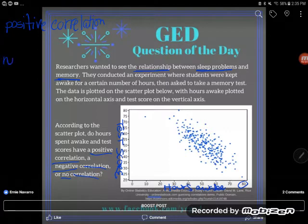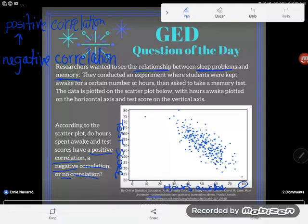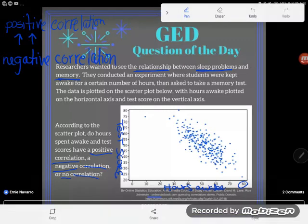Now, what's the idea here? The idea behind positive correlation is that as one of the variables goes up, it increases, the other one increases as well. Again, I'll say as one increases, the other increases as well.